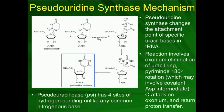Pseudouridine is made from uridine already in tRNA by the enzyme pseudouridine synthase. Here is the uracil. You're going to have the formation of an oxonium intermediate, and when you make it, you're going to have elimination of the uracil ring. The uracil ring is then going to rotate — this oxygen turns up and the other oxygen turns down. There's some thought that this rotation is catalyzed by a critical aspartate residue in the active site. It may be that the aspartate covalently attaches to the uracil and facilitates its rotation. Then this carbonyl oxygen reforms, causing this carbon to attack the ribose and eliminate the oxonium intermediate.